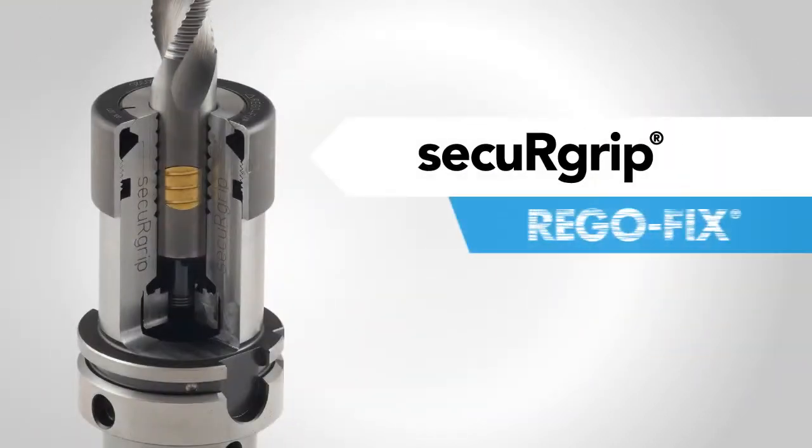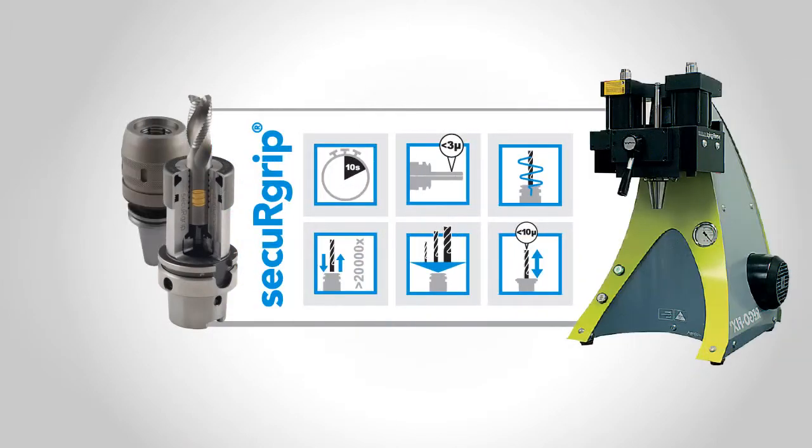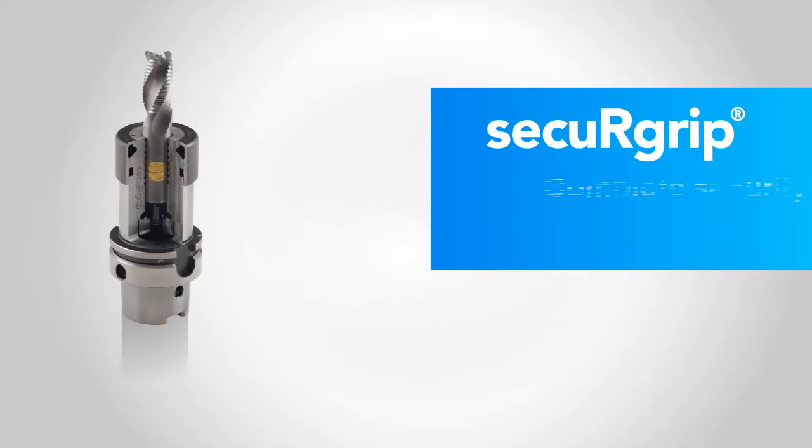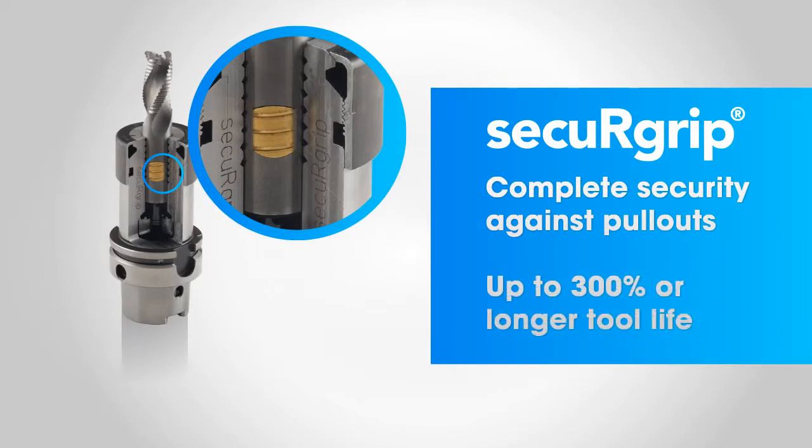Part of the innovative PowerGrip system, as well as Regofix's ER and milling chuck systems, Secure Grip provides complete security against pull-outs, with many customers experiencing 300% longer tool life, or more.